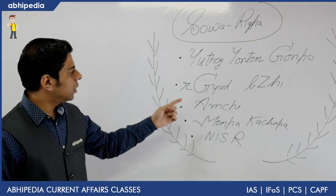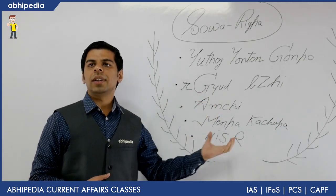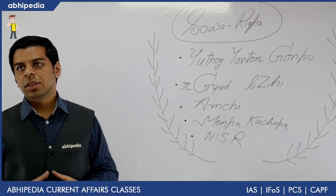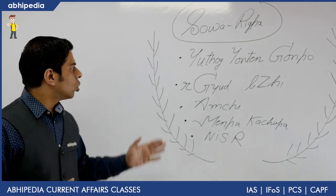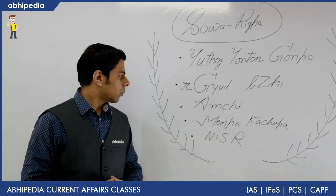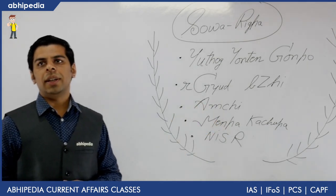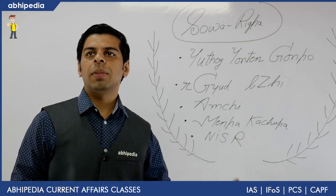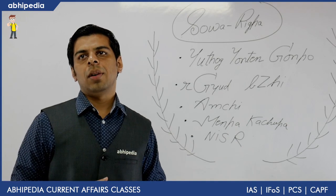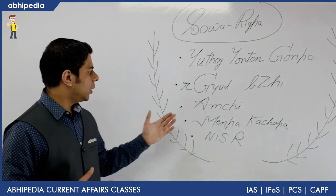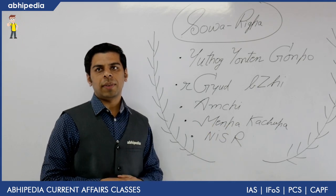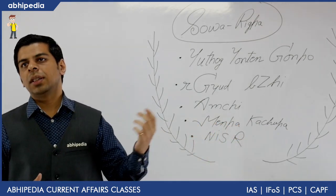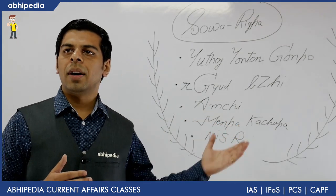Sova Rigpa is once again the science of physical and mental healing involving traditional medical systems. Over the periods, due to India's rich cultural heritage, this medical system has been exported to different parts of the world. The term 'Aamchi' refers to the person who practices this art form — someone who has mastered Sova Rigpa and uses it for the well-being of people. There are formal six-year courses called Manpa Ka Chupa in which the art and science of Sova Rigpa is taught.